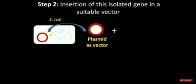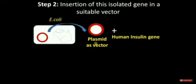Secondly, a suitable plasmid is obtained from a bacterium. Plasmids are extra-chromosomal DNA that are commonly used as a vector to transfer the gene of interest into a host cell for expression. Here I have isolated our plasmid from E. coli bacterium.